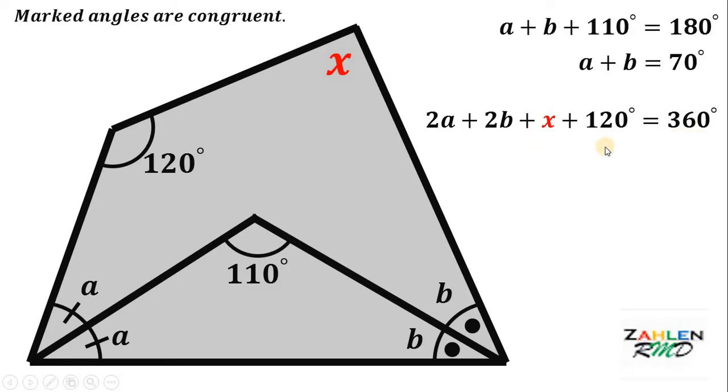Now, what we're going to do is to subtract 120 from both sides and factor out 2. If we do that, we get 2 multiplied by a plus b plus x equals 240.